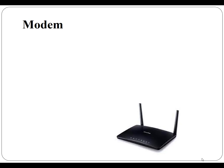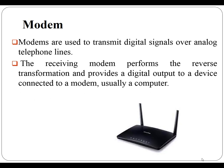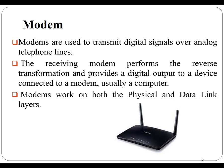Modem, which is also called modulator or demodulator, is used to transmit digital signals over analog telephone lines. Digital signals are converted by the modem into analog signals of different frequencies and transmitted to a modem at the receiving location. The receiving modem performs the reverse transformation and provides a digital output to a device connected to a modem, usually a computer. The digital data is usually transferred to or from the modem over a serial line through an industry standard interface RS-232. Many telephone companies offer DSL services and many cable operators use modems as end terminals for identification and recognition of home and personal users.